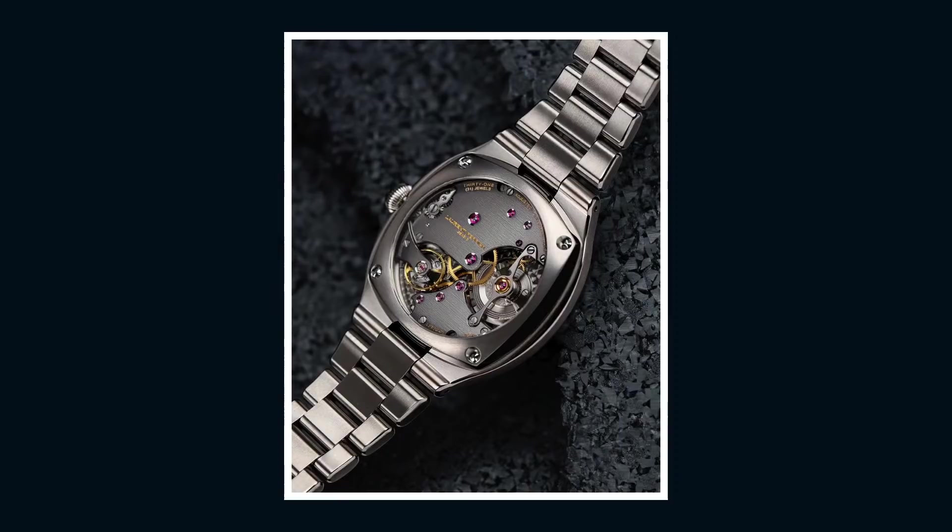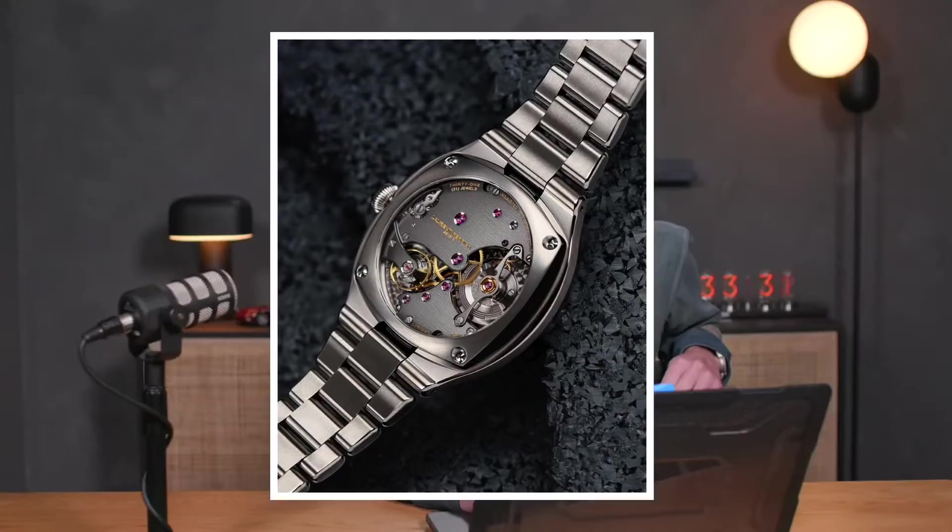And Laurent Ferrier is going to make it in their inimitable fashion, which means movement finish will be one of the core attractions. I will be honest, the micro rotor 3-day automatic caliber 270-01 is not as ambitious as what you'll find on, for example, the FBN 229, but it is far above what you'll find in this category from the likes of Audemars Piguet, Patek Philippe, and even Vacheron with their Geneva Seal movements. This is on par or better, so don't compare it to the other Galet micro rotor automatics. Compare it to the other options in the sports watch class.